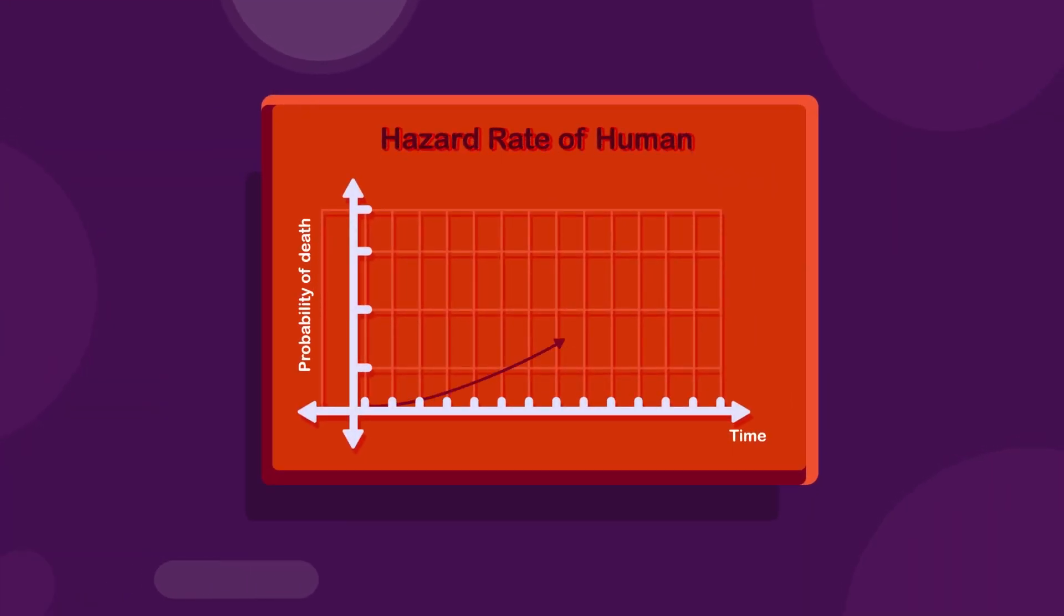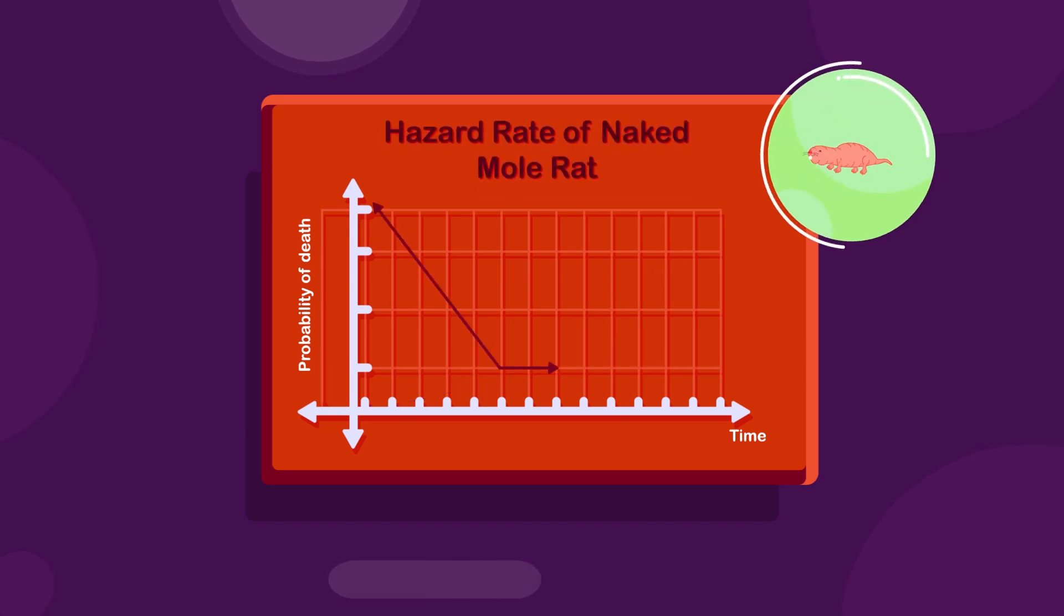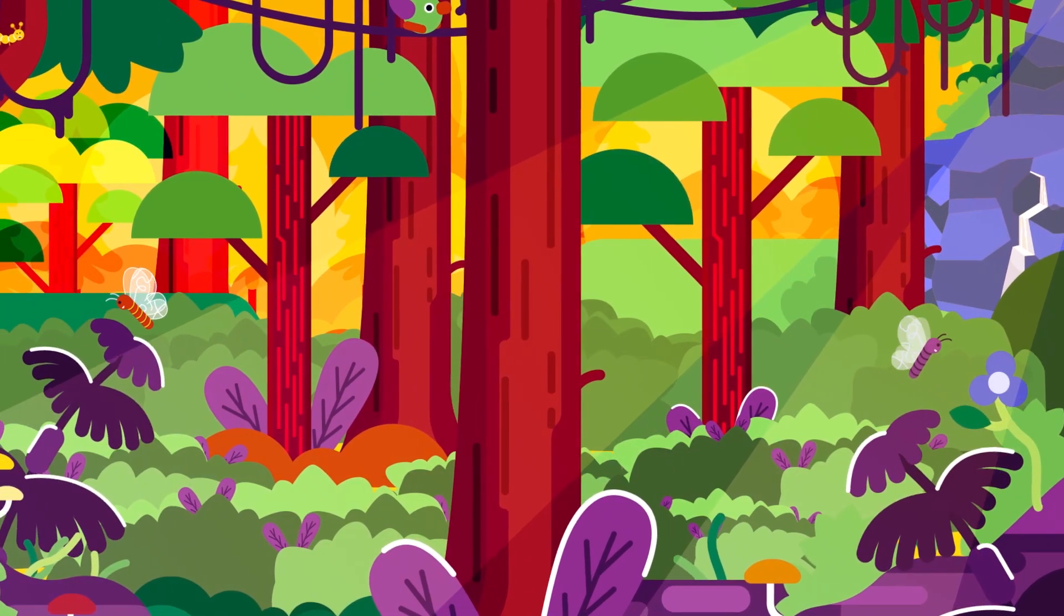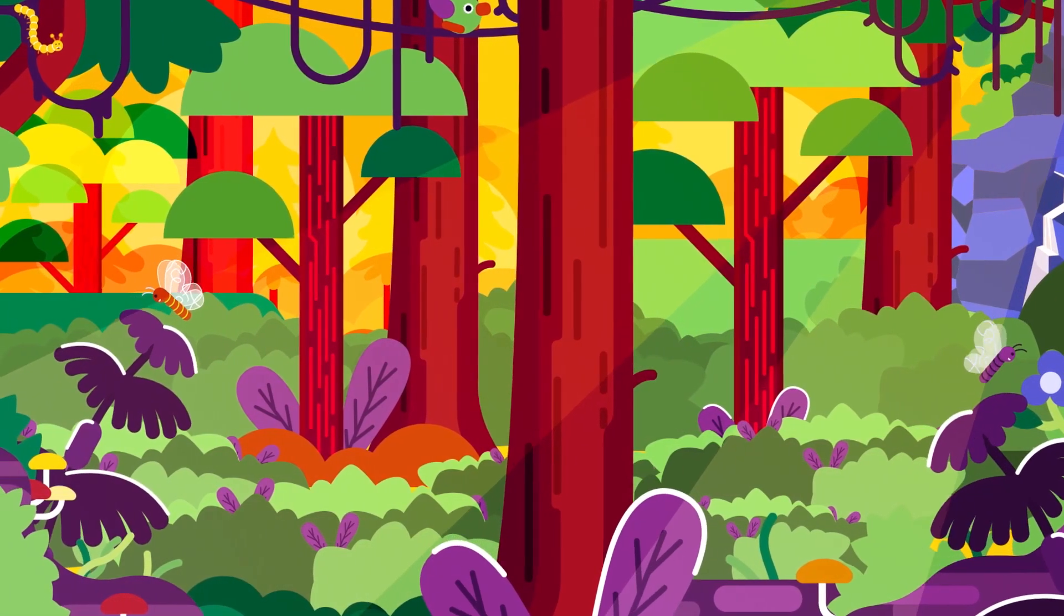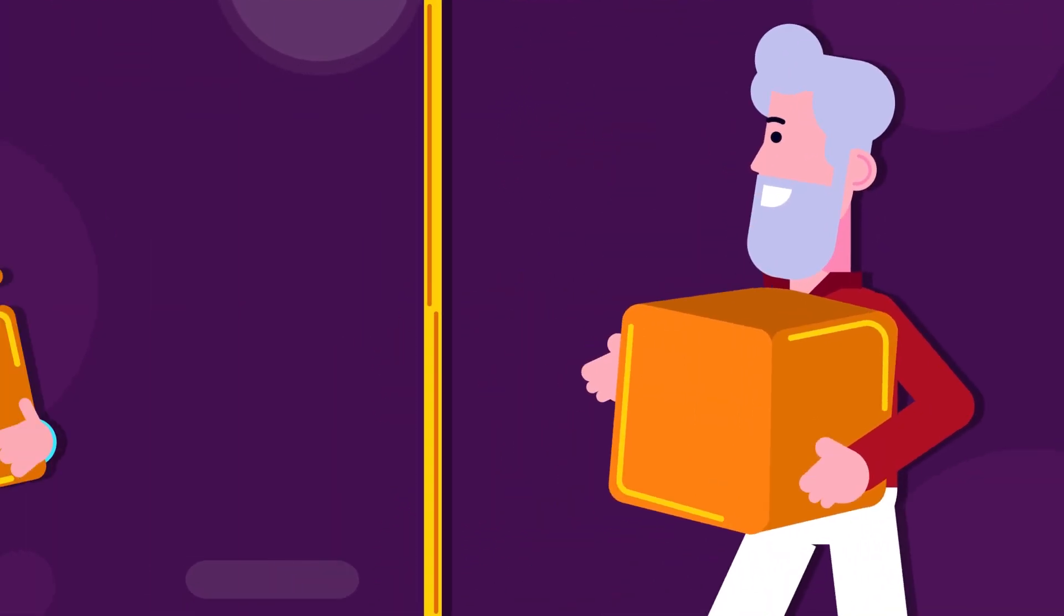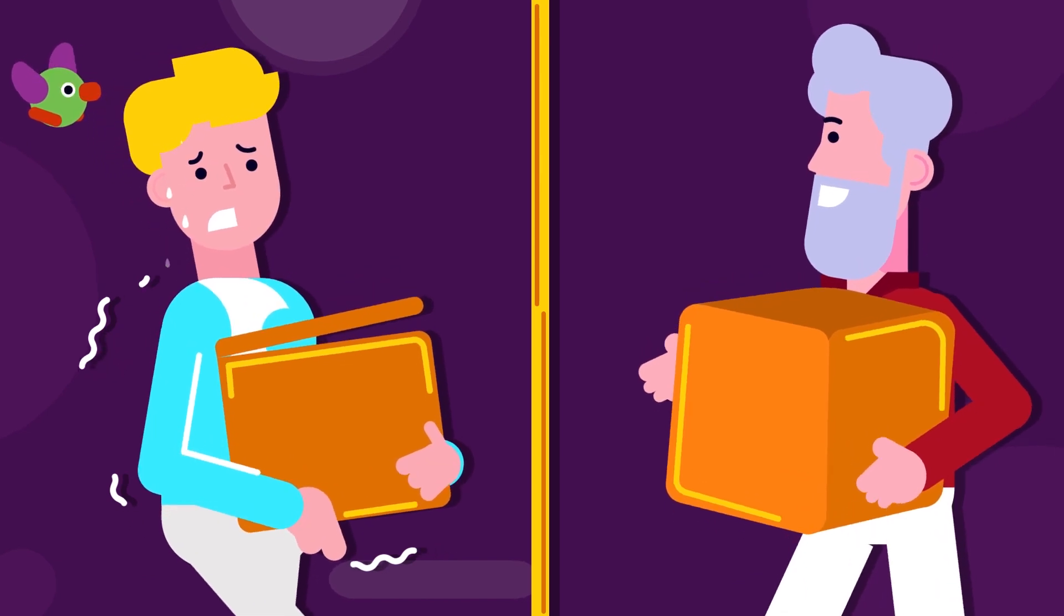Aging is the increasing probability of death of an organism from internal causes. Many plants and some animals do not age. Sequoia trees, for example, grow stronger and hardier with each passing year. No law of biology states that an old body cannot be stronger and healthier than a young body.